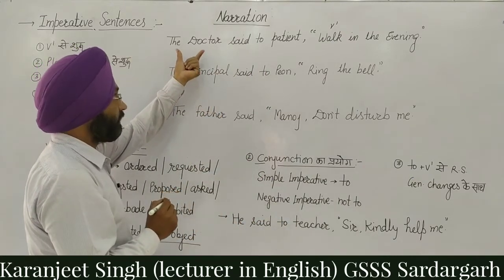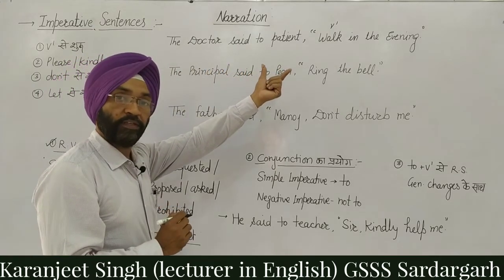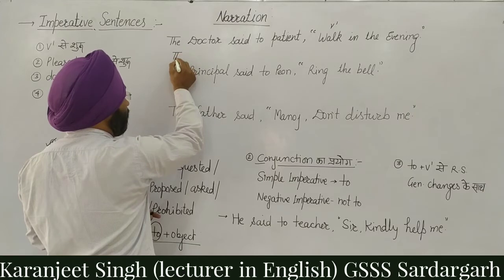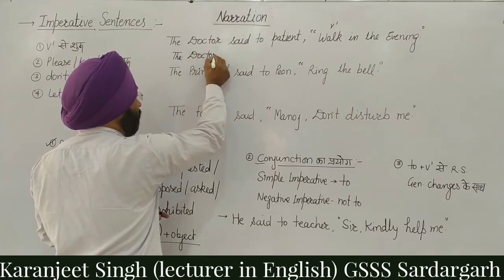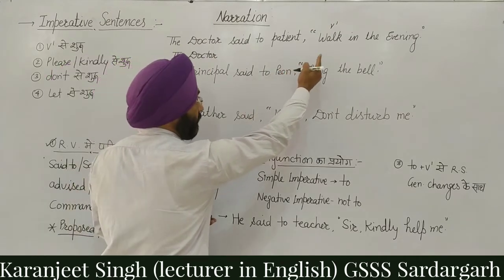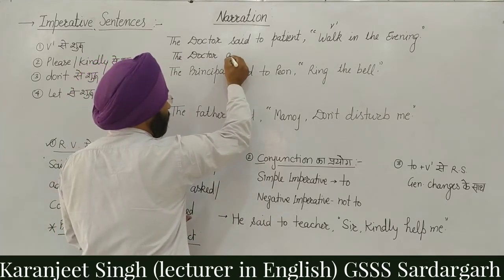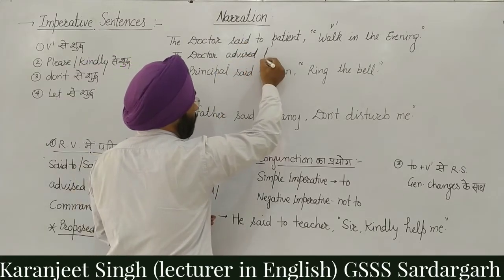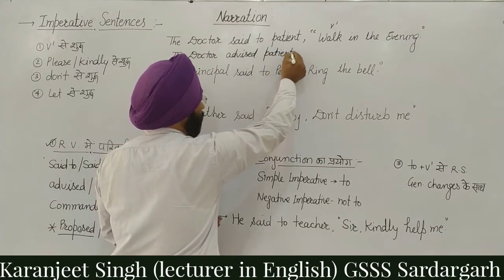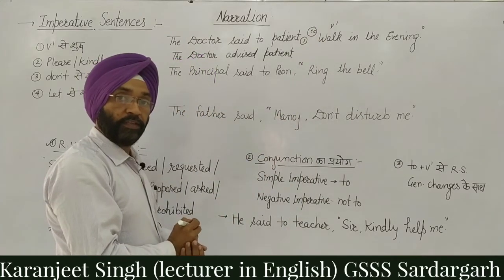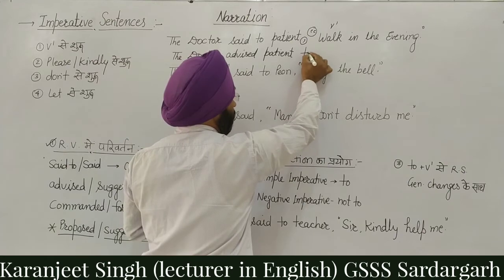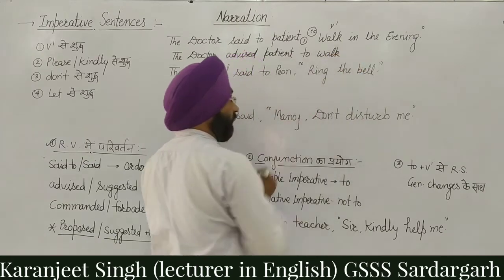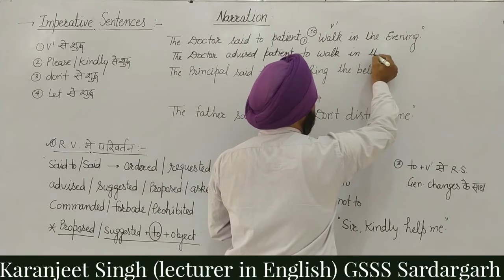First sentence: 'The doctor said to patient, Walk in the evening.' Ye ek advice hai jo doctor ki taraf se patient ko di gayi hai. Indirect mein: subject 'The doctor' likhenge, phir reporting verb — advice ka concept hai toh 'advised' ('said' ki jagah second form 'advised'). Phir object 'patient'. Comma inverted comma hatake conjunction 'to' ka use karenge. Phir first form of the verb se sentence: 'to walk in the evening.' → The doctor advised patient to walk in the evening.